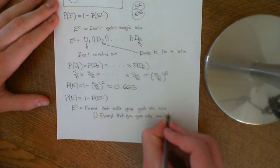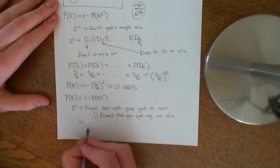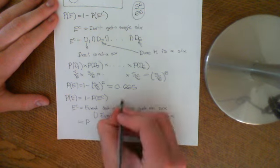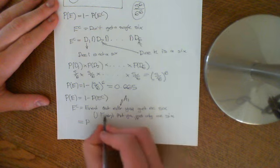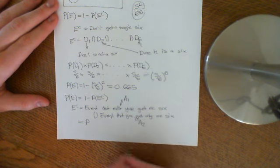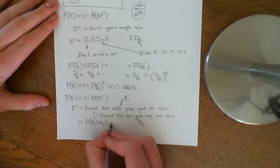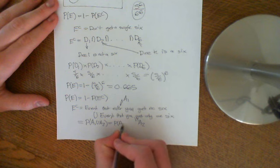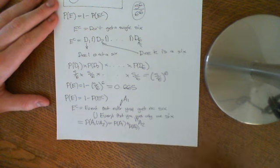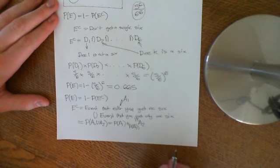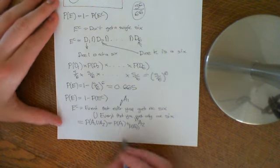Let's call A1 the event that you don't get a single six, and A2 the event that you get only one six. Since A1 and A2 are disjoint, P(A1 ∪ A2) = P(A1) + P(A2). I don't need the minus term because the intersection of A1 and A2 is the empty set, and the probability of the empty set is zero.